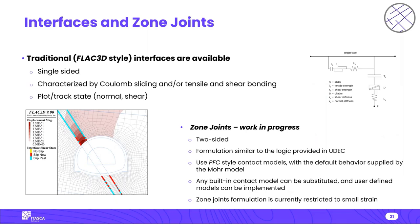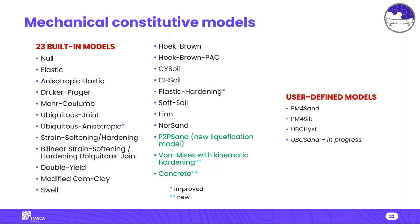FLAC 2D supports interfaces in FLAC 3D style — they are single-sided, characterized by Coulomb sliding and tensile and shear bonding, and you can plot and track interface state such as normal and shear state. Zone joints have also been introduced in the common framework and are available in FLAC 2D but are not yet fully documented and tested — they are two-sided, allow more precise calculations when multiple interfaces intersect, and are similar to the logic in UDEC. Full testing and documentation of zone joints will be completed in coming updates.